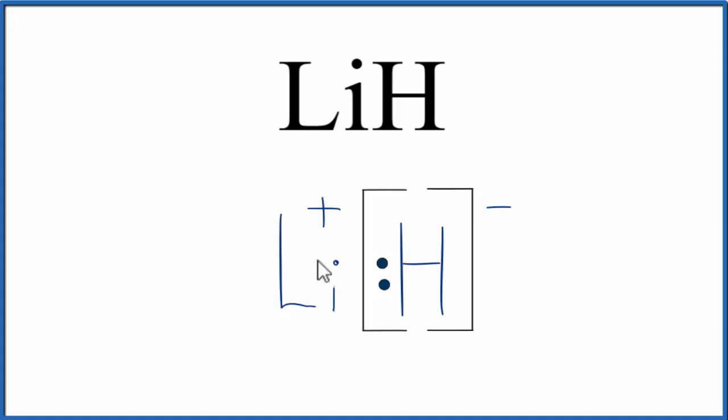We should also note that this is what's called a formula unit. When we have an ionic compound, like LiH, it's made up of a repeating array of these formula units, called a crystal.